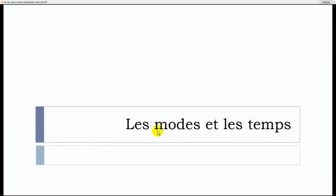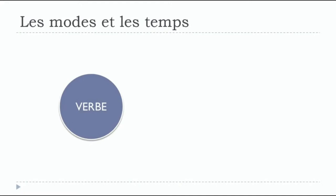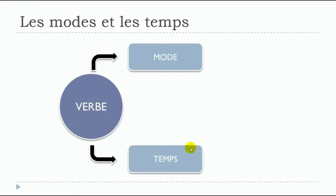When you translate that directly, we're talking about moods and tenses. In English, if you want to use a verb, you will have to decide whether you are using a certain mood, and also whether you are using a certain tense for this verb, because the moods and the tenses will be used in specific contexts or situations.